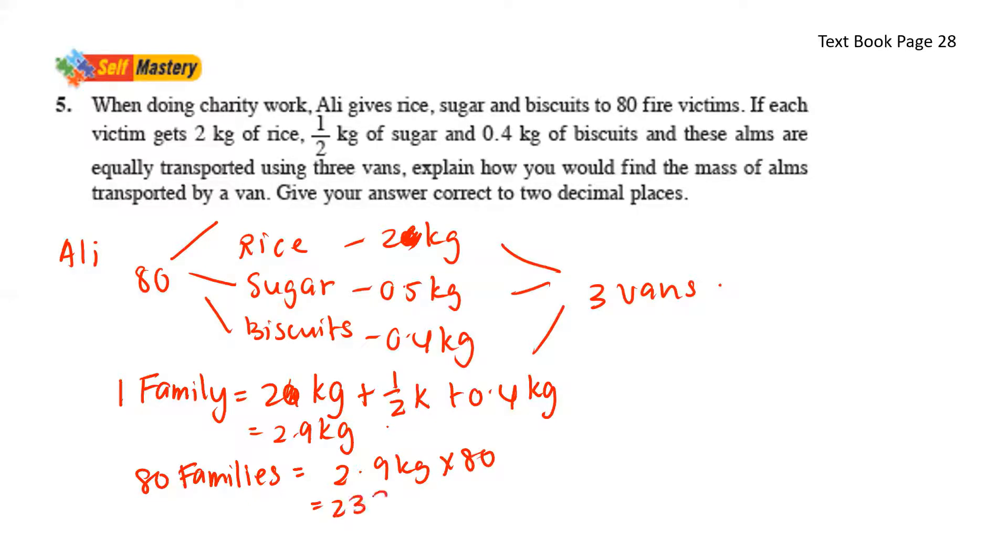So for three vans, the total weight carried will be 232 kg, which means for one van, divide it by 3, and this will give us 77.3 kg.